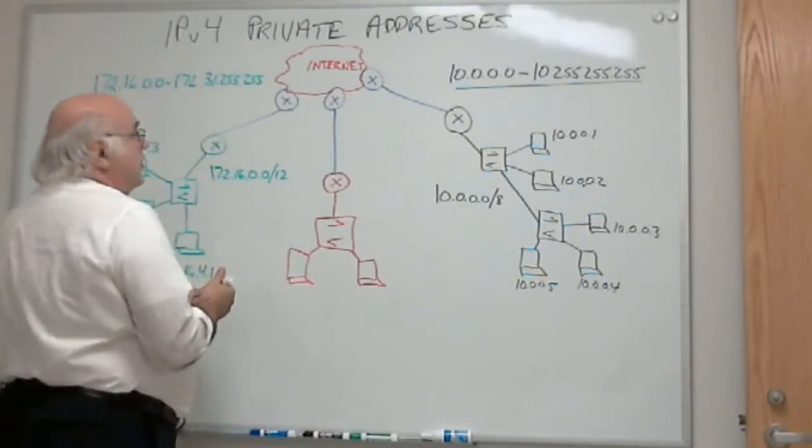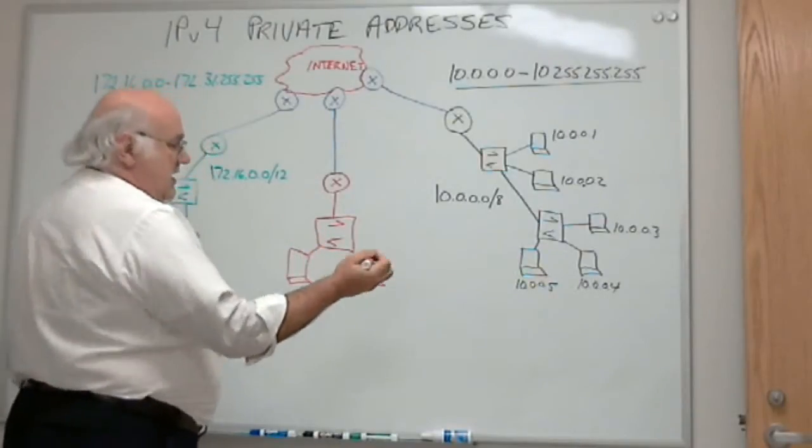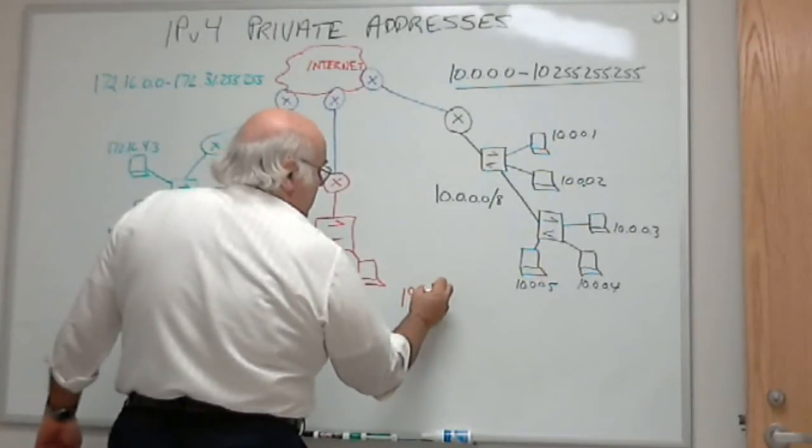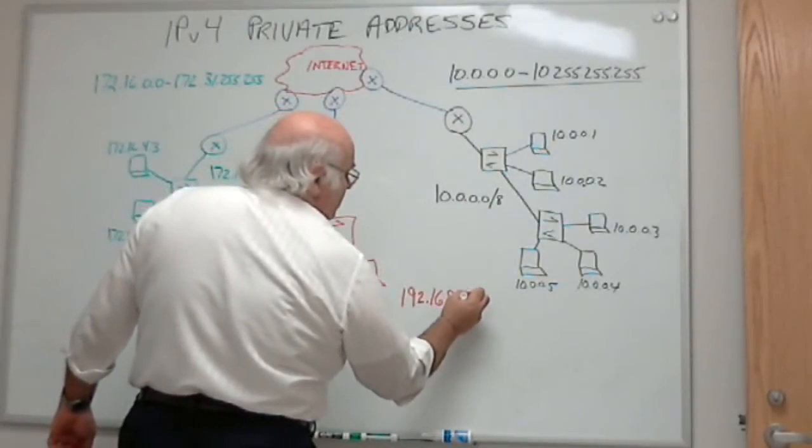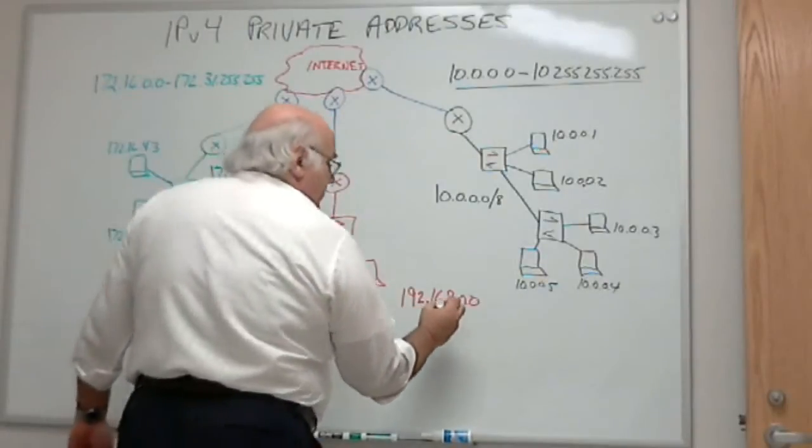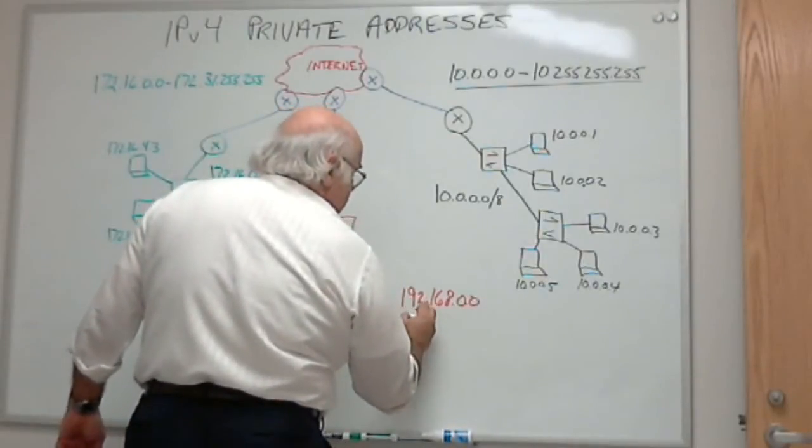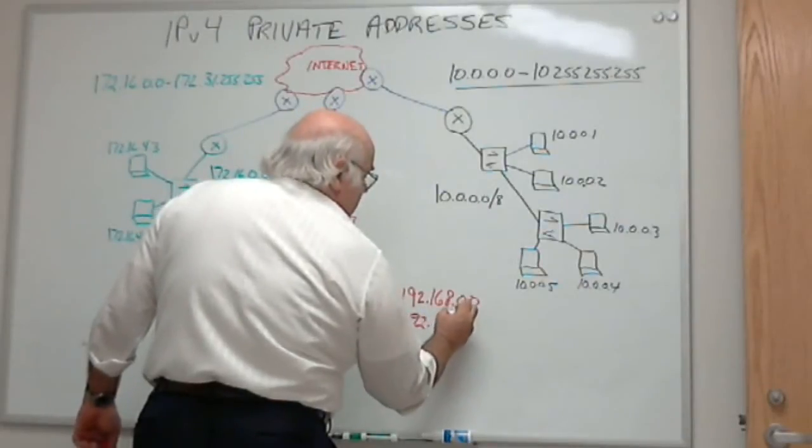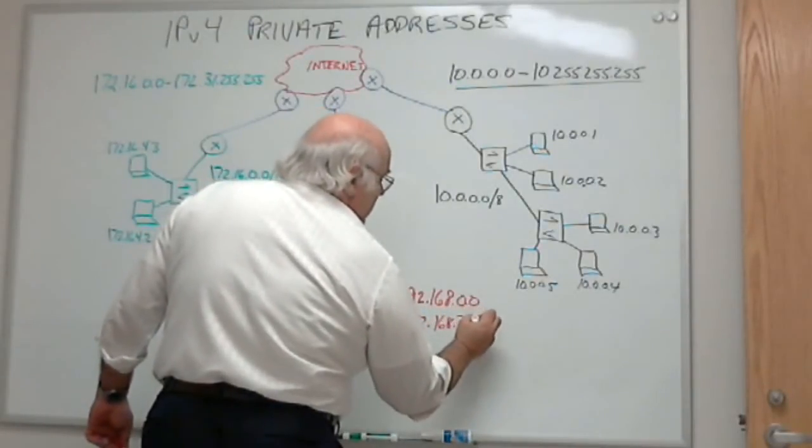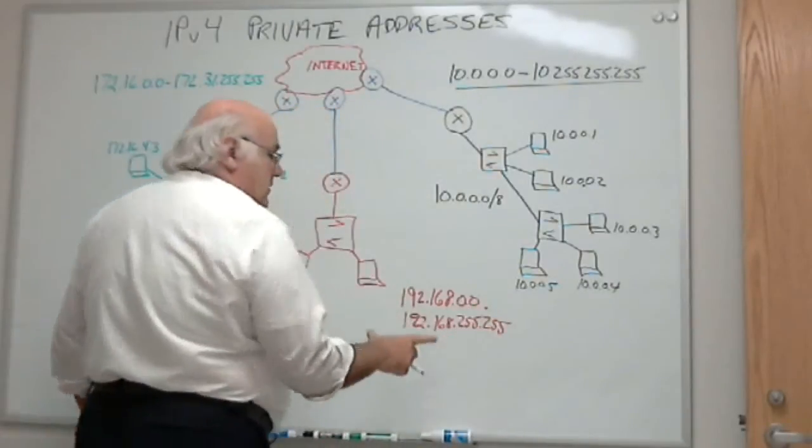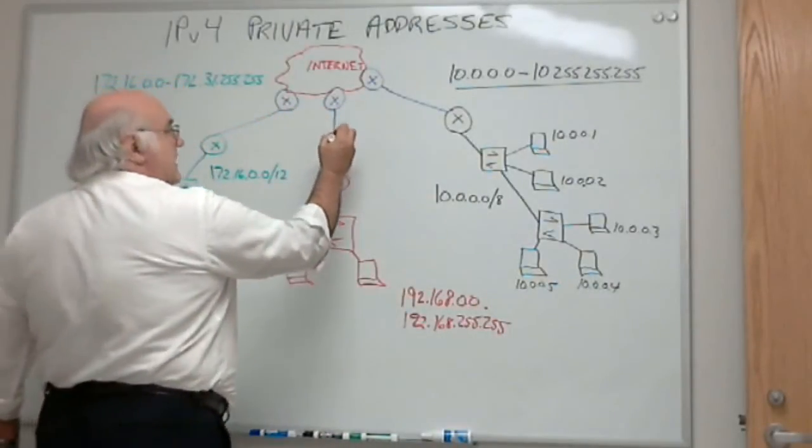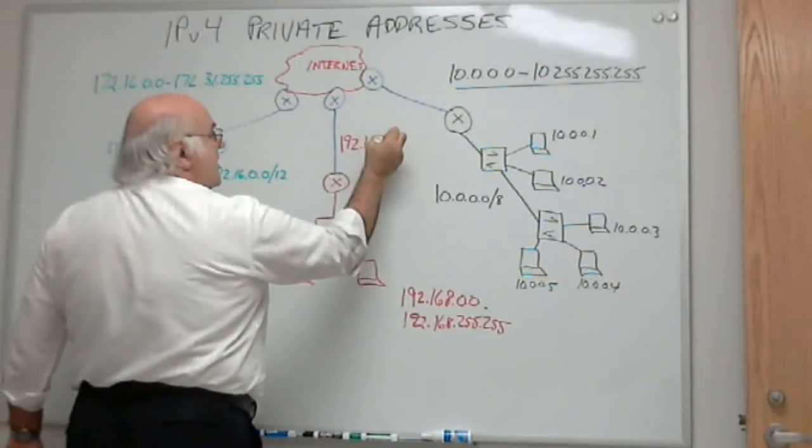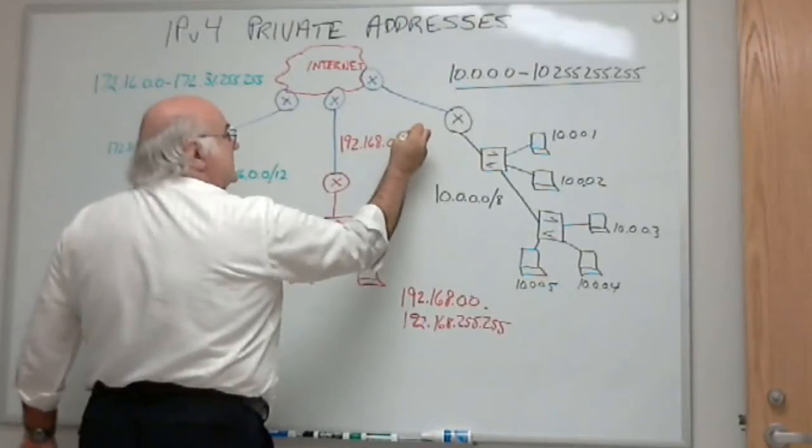So we have two blocks so far. Let's look at the third block of private addresses we can do. Third block of private addresses we can do is 192.168.0.0 through 192.168.255.255.